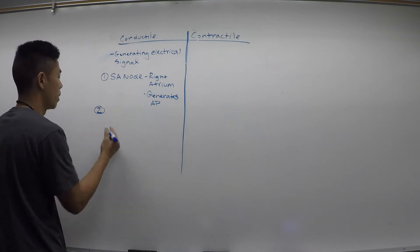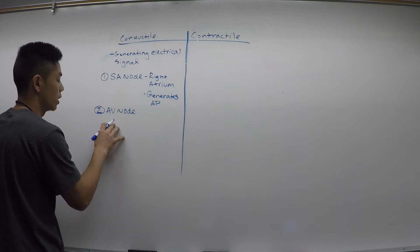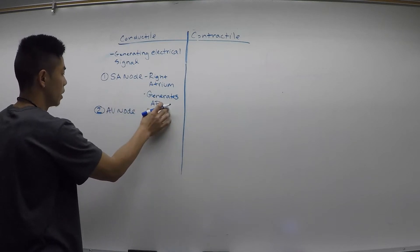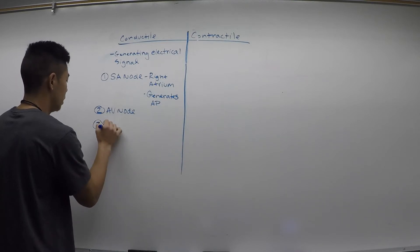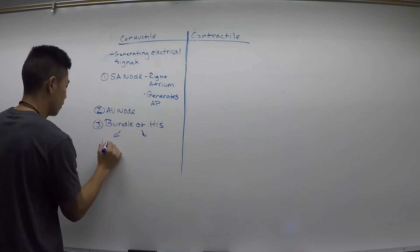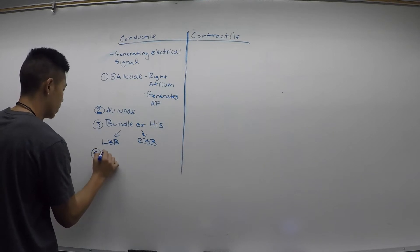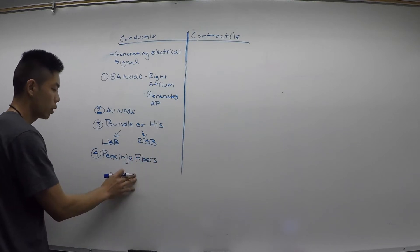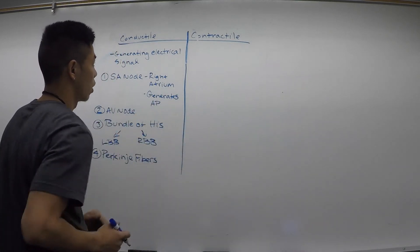Another conductile cell to remember is our AV node, which is going to be located between the atrium and the ventricle — just a cluster of conductile cells. The SA node creates its action potential, which goes through the AV node to our next conductile cells: the bundle of His, which breaks off into the left and right bundle branches, and those branches then break off into the Purkinje fibers. The Purkinje fibers are the ones connecting the conductile and contractile cardiomyocytes.